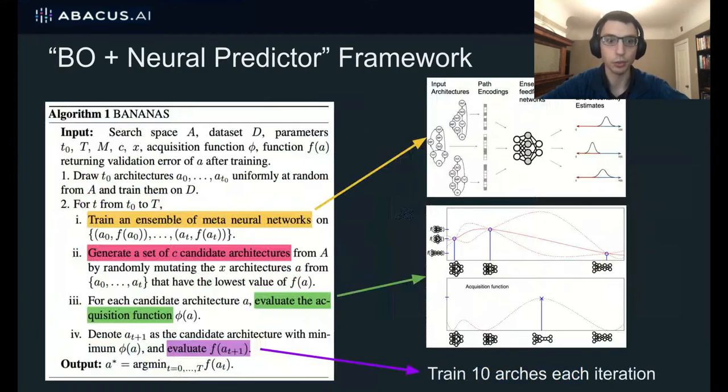So now let me explain this framework a bit more formally. We start by picking a few architectures uniformly at random from the search space and training them to completion to get their validation accuracy. Then we take these architecture and accuracy pairs, and we train an ensemble of neural networks to take in the architecture and predict the validation accuracy. So once we have this neural predictor trained, we generate a set of candidate architectures and then predict their performance using our neural predictor. And since we trained an ensemble, we can also get uncertainty estimates for these predictions. Then we take these predictions of accuracy as well as the uncertainty estimates and evaluate an acquisition function for all of the candidates. And then we take the candidate which maximizes the acquisition function and then we train it to completion and start the next iteration.